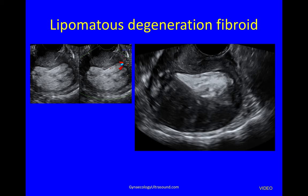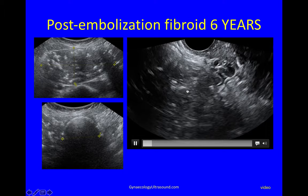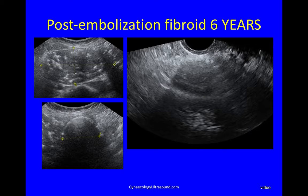When people have had embolization of a fibroid — in this particular case six years later — you can see dense peripheral calcification, this starry sky appearance, and this is still a large uterus with a lot of big fibroids which have undergone these different kinds of degeneration.